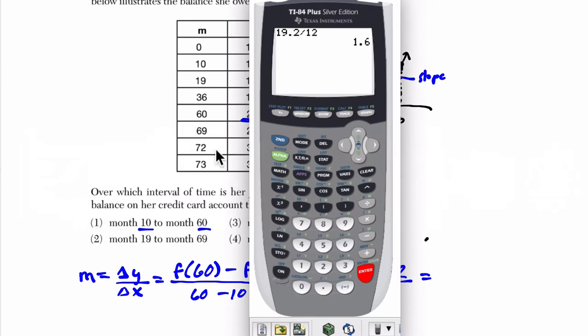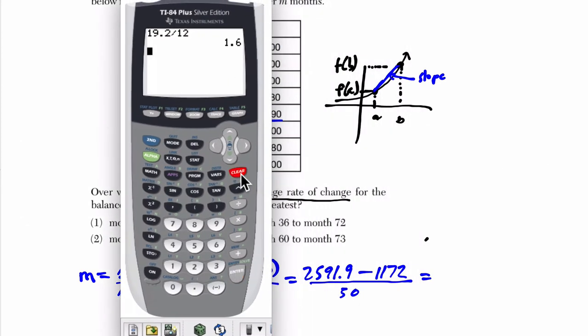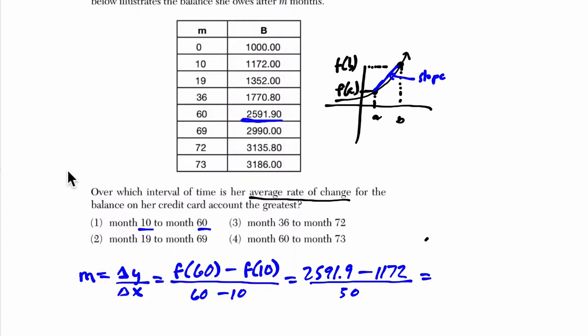If I pull up my calculator, I think this is the fastest way to do this. If we know another way, please let me know. It's 2591.9 minus 1172, enter, divided by 50, 28.398. Notice I didn't put 2591.9 minus 1172 divided by 50. That would only divide the second number by 50. If you want to enter it all at once, you would add parentheses around 2591.9 and the 1172 and divide the whole thing by 50.